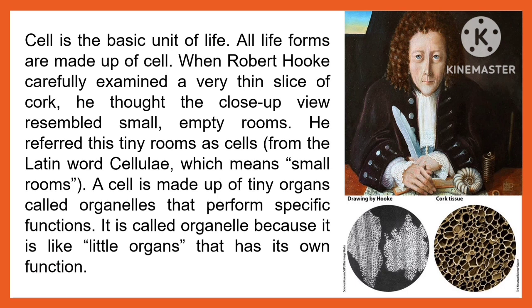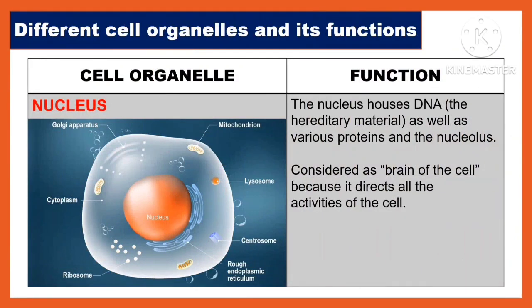The following are the different cell organelles and their functions. The nucleus houses DNA or hereditary material as well as various proteins. The nucleus is considered the brain of the cell because it directs all the activities of the cell.